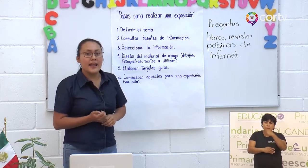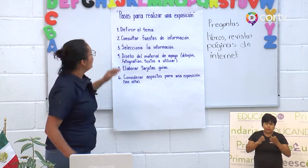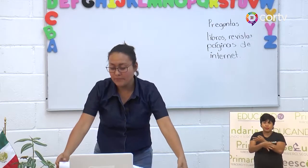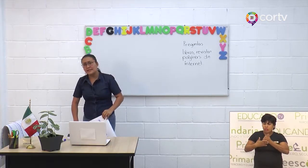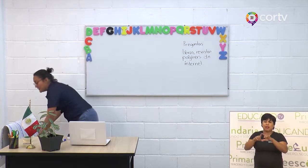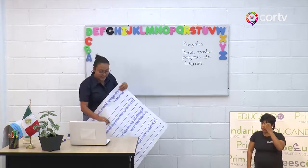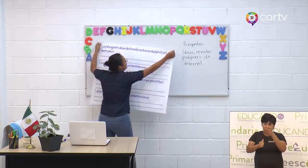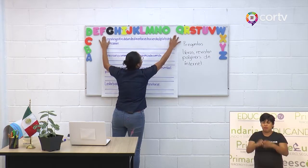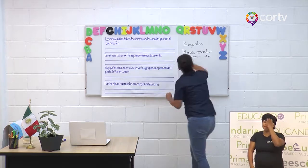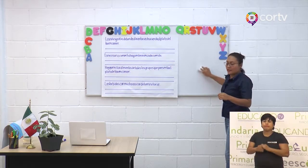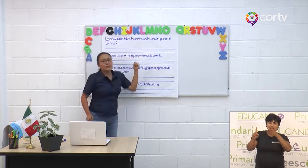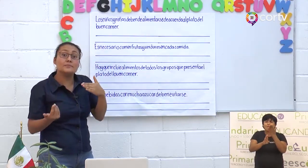Estos son algunos pasos para la exposición. Fíjate que yo estaba preparando una exposición para ti, pero mientras preparaba la exposición elaboré una lámina, y quiero que me ayudes a descubrir qué es lo que tiene esta lámina de diferente. Vamos a observar detenidamente la lámina y tú me vas a ayudar a ver si cumple con estos pasos para la exposición de un tema. La oración está toda junta y no hay espacio entre palabras.